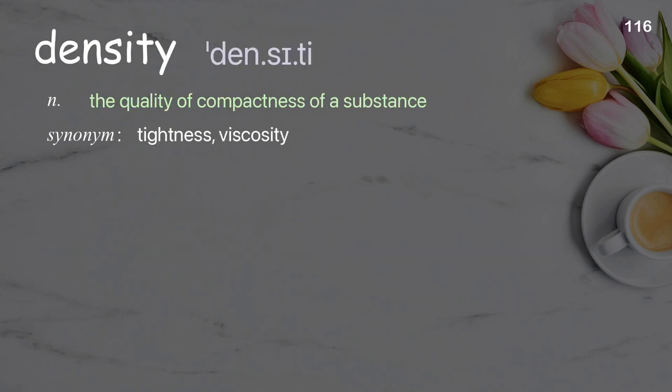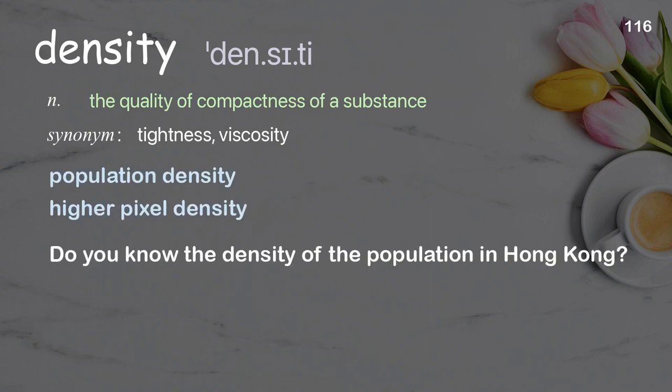Density. The quality of compactness of a substance. Examples: population density, higher pixel density. Do you know the density of the population in Hong Kong?